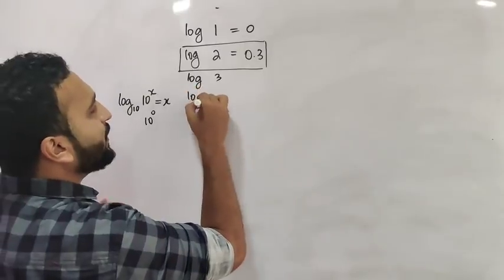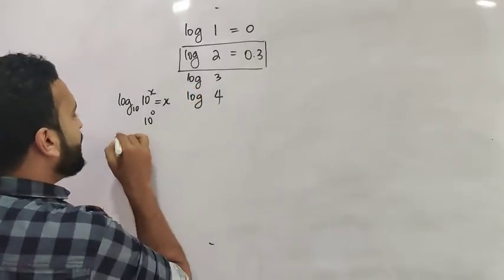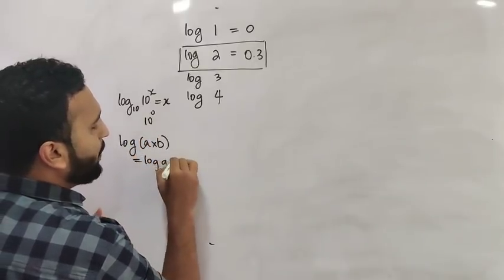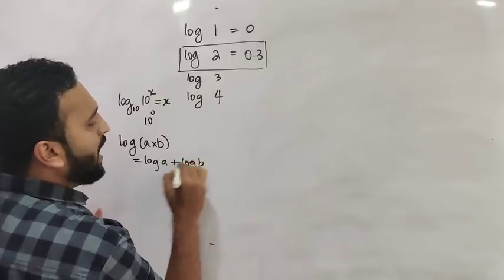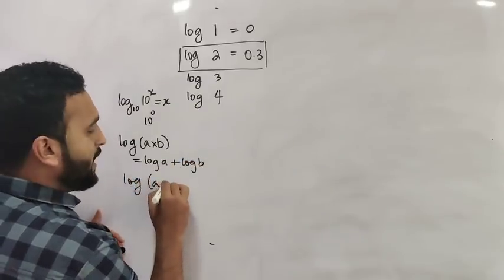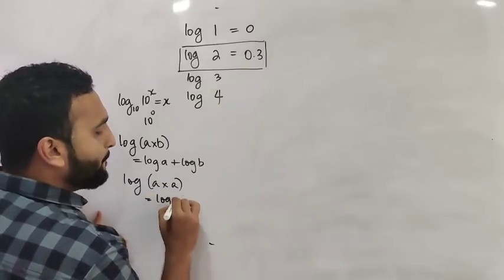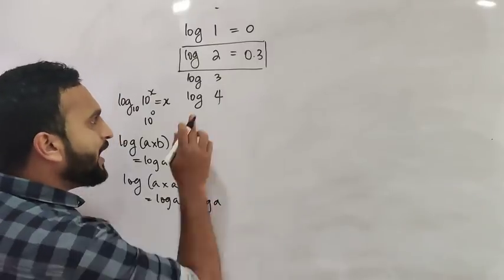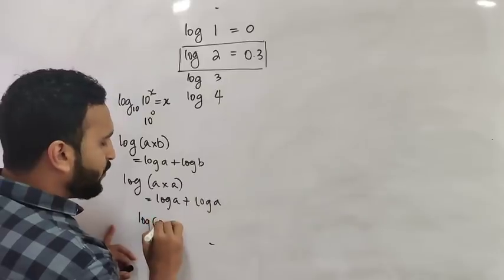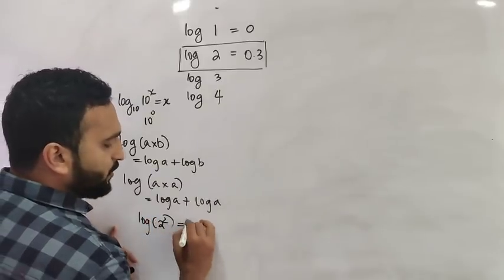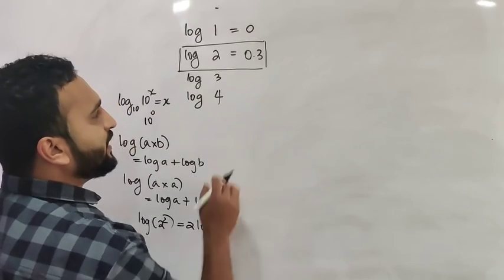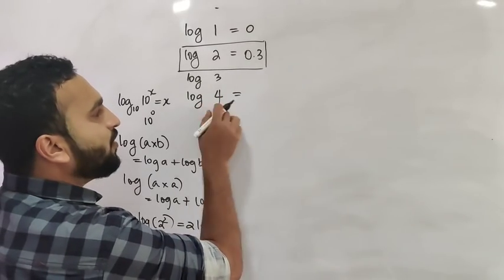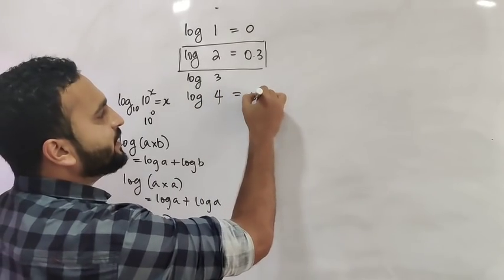Log of 4 uses the product rule: log of a into b is log a plus log b. So log of a squared is 2 times log a. Therefore log of 4 is log of 2 squared, which equals 2 times log 2 = 2 × 0.3 = 0.6.